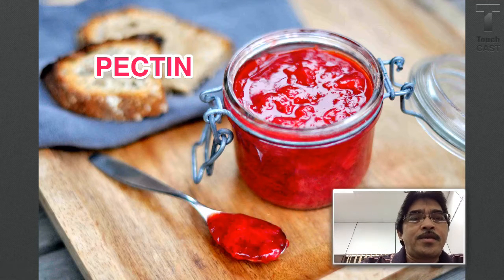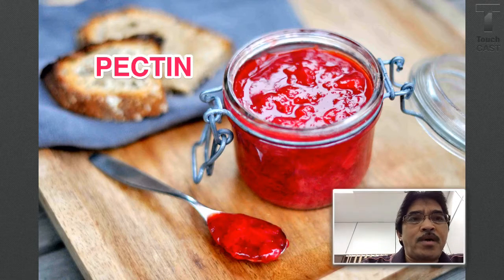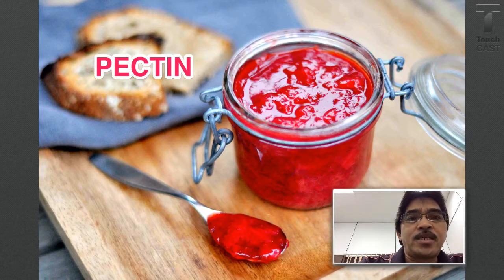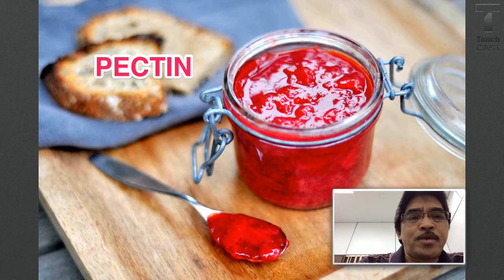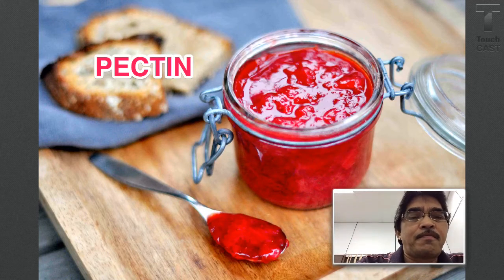Hi, hello. In this brief presentation, I would like to talk about one common food ingredient. We call it pectin. This is commonly found in products like jam, as you can see in the picture here, in beverages like yogurt drink, and all kinds of food products where we can use pectin.